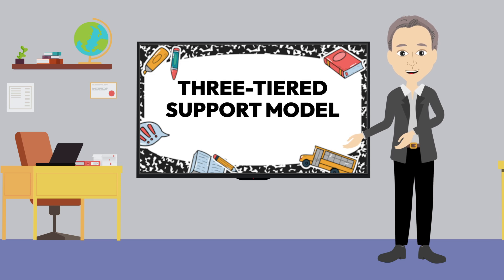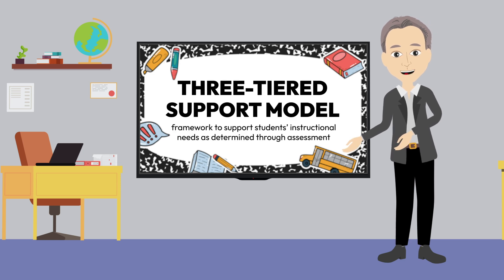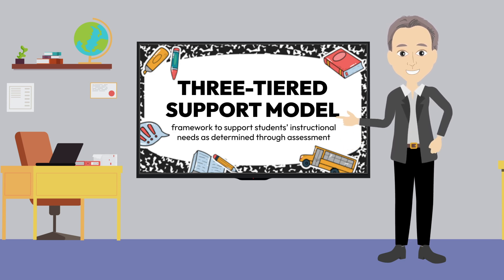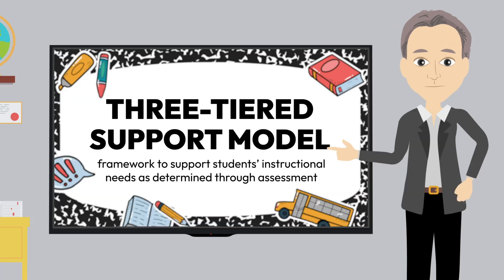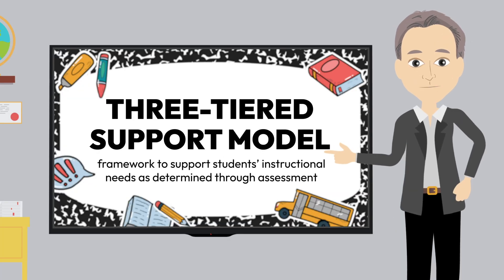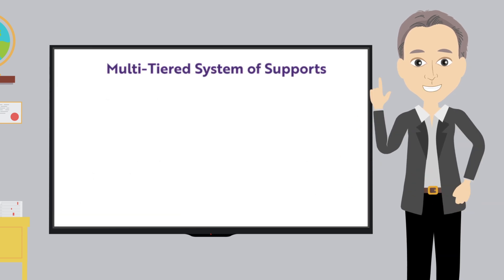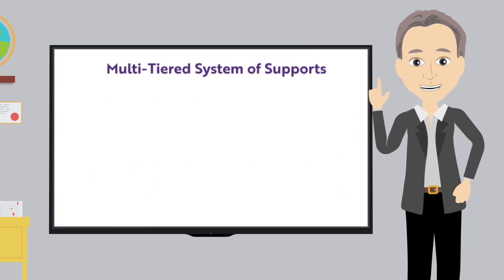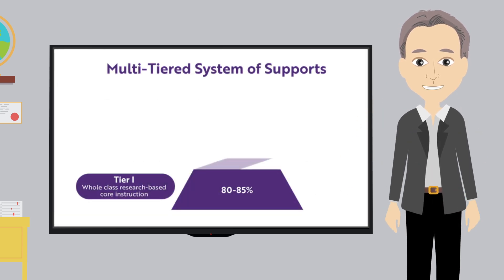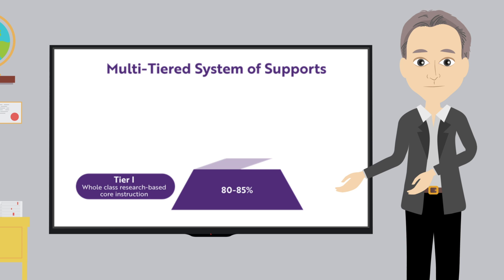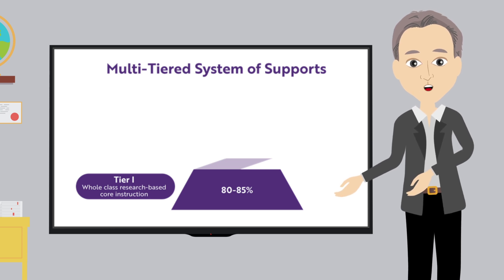The three-tiered support model is a framework for providing varied levels of support to meet students' instructional needs as determined through assessment. This model is often represented as a pyramid with three divisions or tiers of support, with the base representing Tier 1, or the regular core instruction that occurs in the classroom.